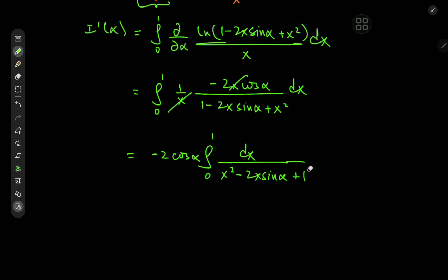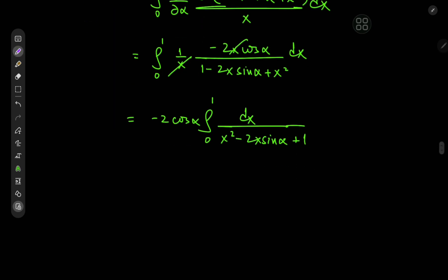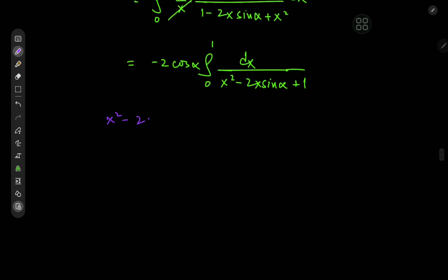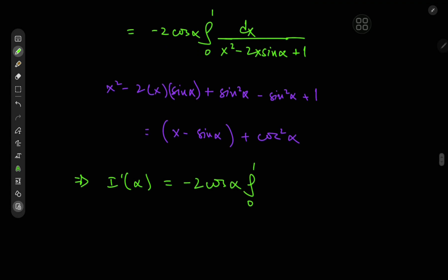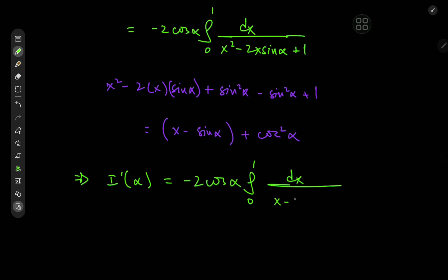The denominator is ready for completing the square. We write x squared minus 2x sine(α) as (x minus sine(α)) squared minus sine squared(α), so adding 1 gives (x minus sine(α)) squared plus (1 minus sine squared(α)), which equals (x minus sine(α)) squared plus cosine squared(α). Therefore I′(α) equals negative 2 cosine(α) times the integral from 0 to 1 of dx divided by ((x minus sine(α)) squared plus cosine squared(α)).